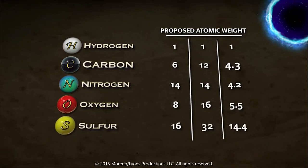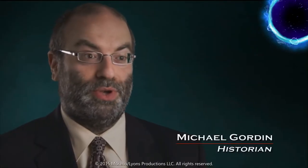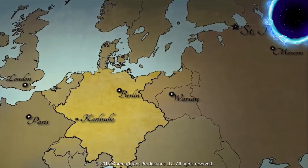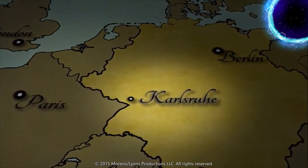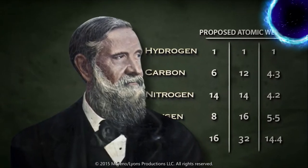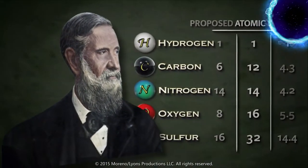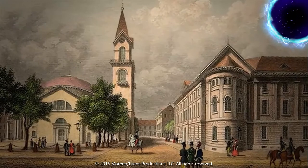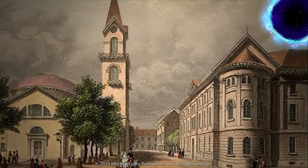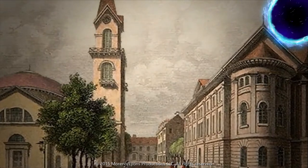Did carbon weigh six, or twelve, or four? That depended on who you talked to and when. By the late 1850s, people were incredibly confused. That changed in 1860, when chemists organized their first ever international meeting in Karlsruhe, Germany. There, an Italian chemist named Stanislaw Cannizzaro laid out a persuasive case for a new uniform system of atomic weights. One witness recalled: 'He seemed to advocate truth itself.' After Karlsruhe, something astonishing started to happen — within a few years, you start seeing lots of different attempts to organize the elements based on these new post-Karlsruhe weights.